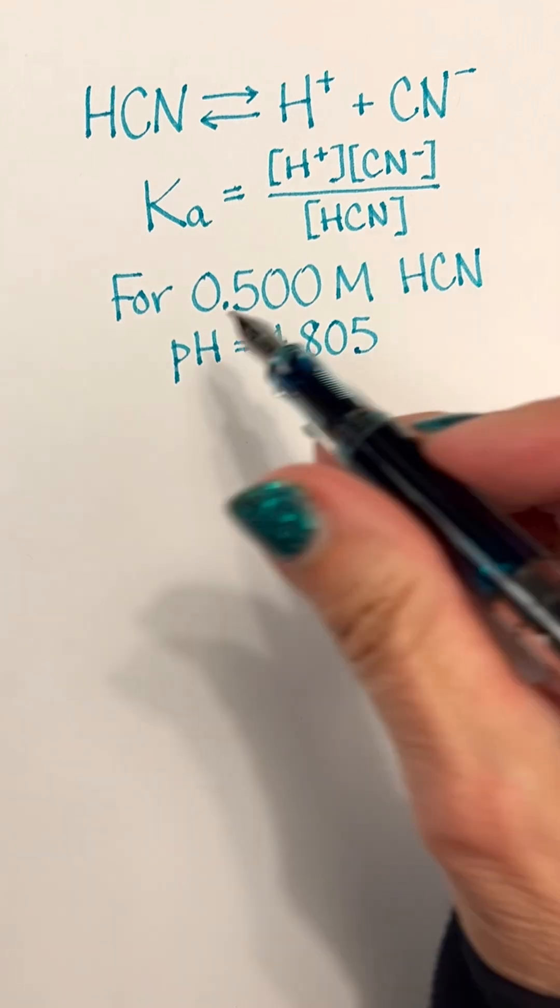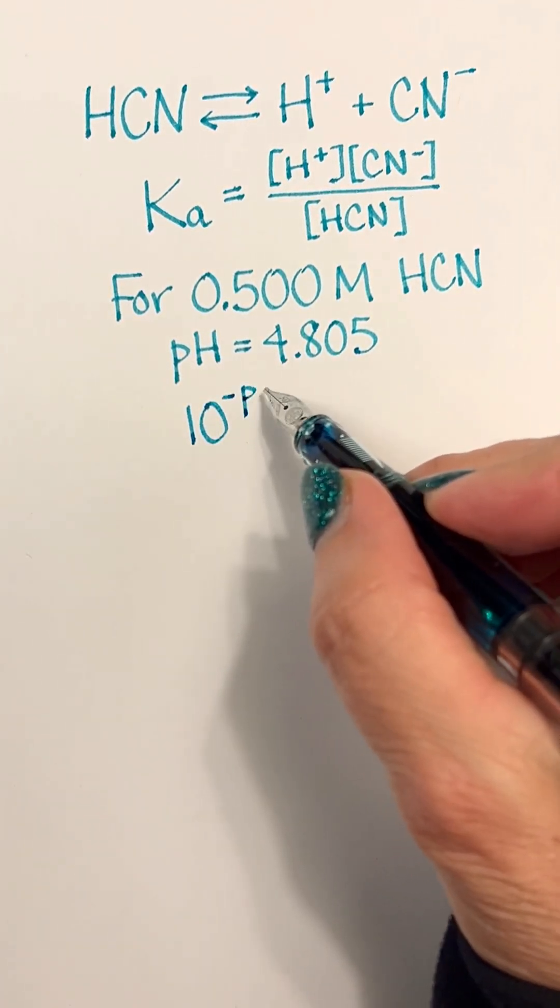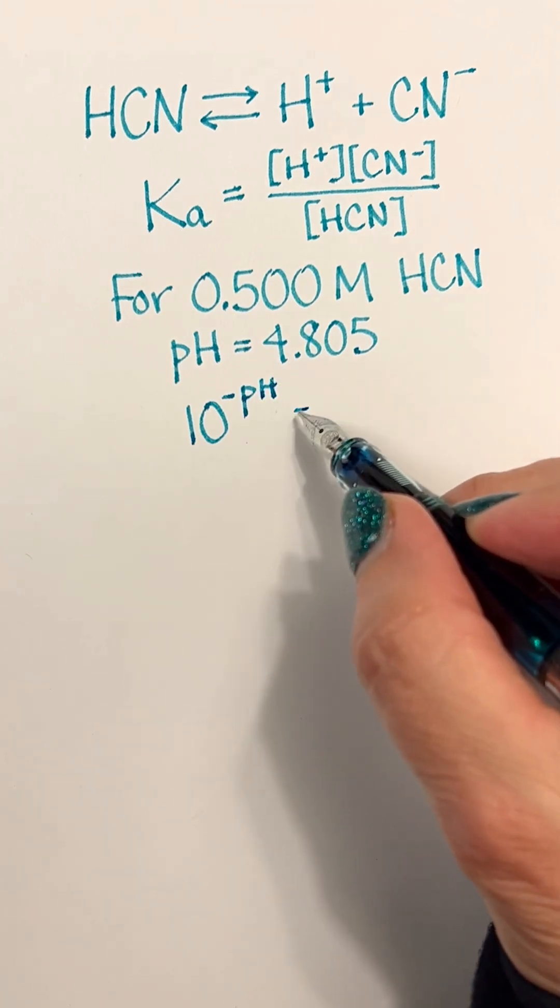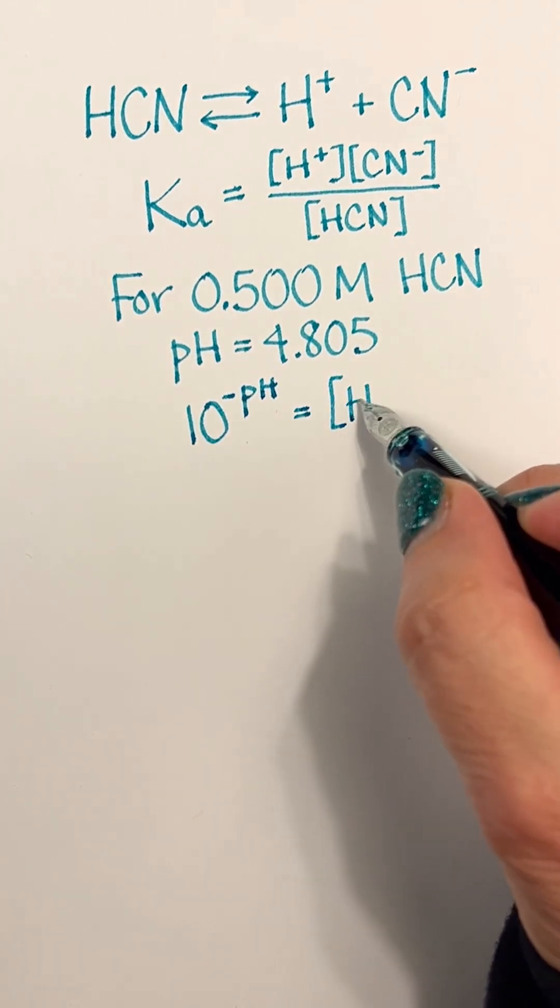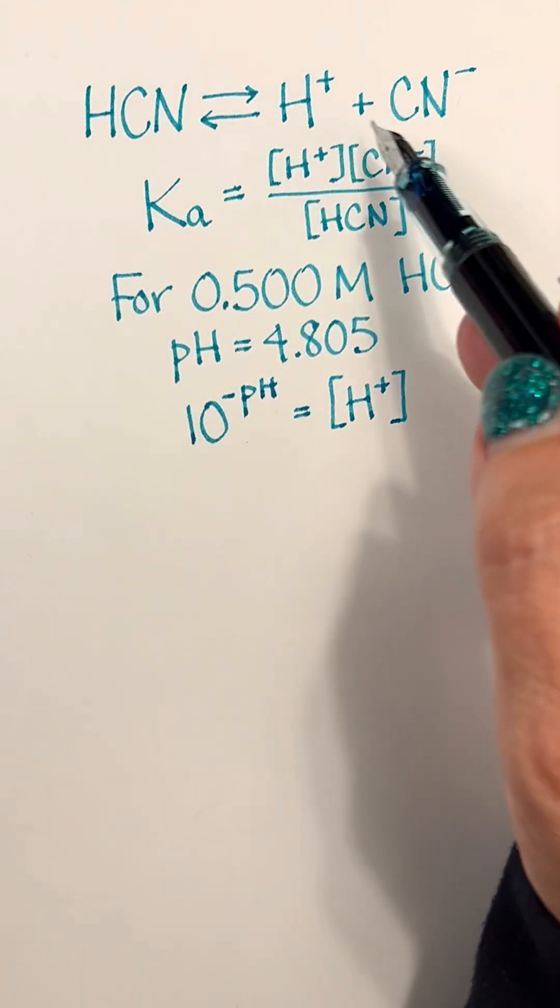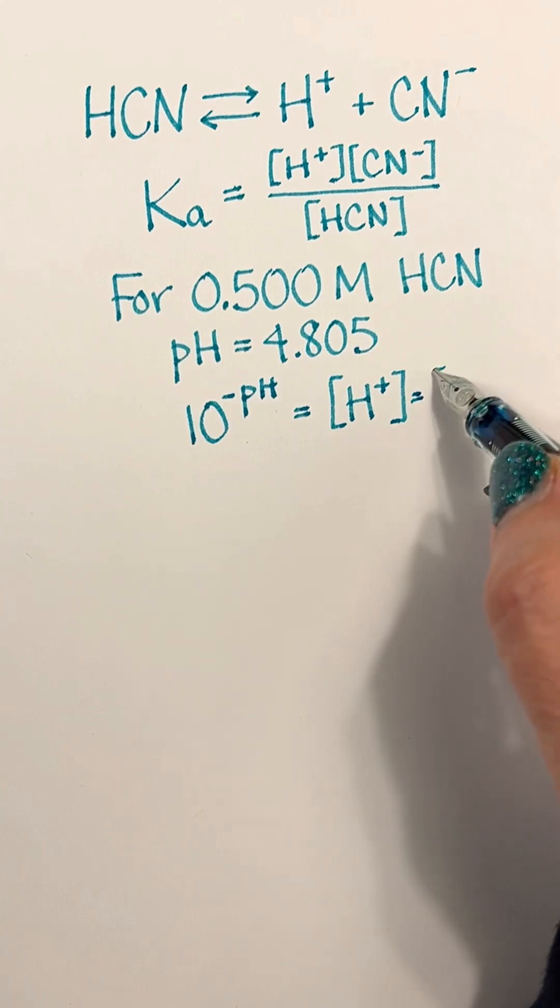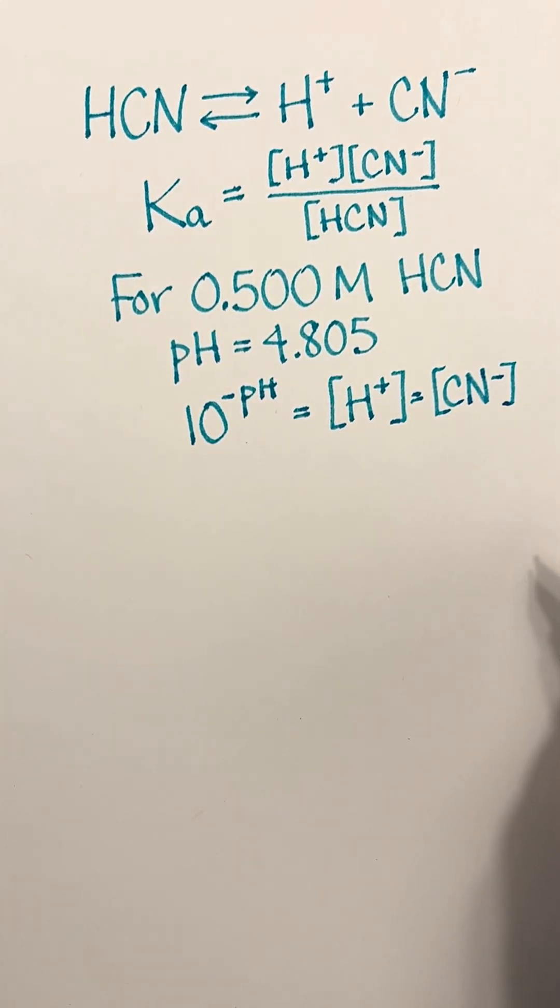And part of the reason for that is from the pH, we can calculate the concentration of hydrogen ions. And because of this 1 to 1 ratio between H plus and CN minus, that is also the concentration of CN minus.